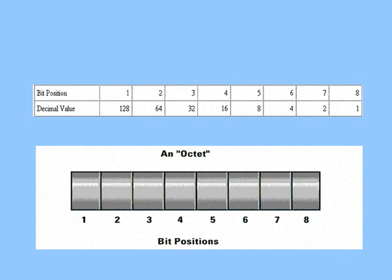Now, what is the value of those 5 bits? Going from left to right, we know that the first bit has a decimal value of 128, the second bit 64, the third bit 32, the fourth bit 16, and the fifth bit 8. Now I have a total possibility of having 32 subnets. What is the total decimal value of those 5 bits?